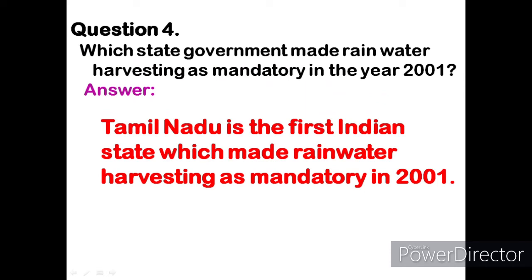Question 4: Which state government made rainwater harvesting mandatory in the year 2001? Answer: Tamil Nadu is the first Indian state which made rainwater harvesting mandatory in 2001.